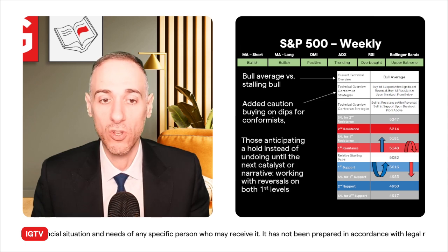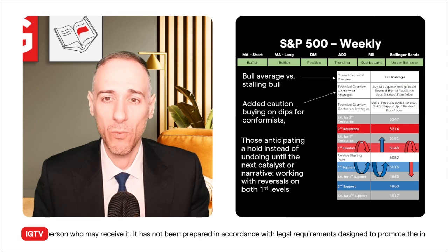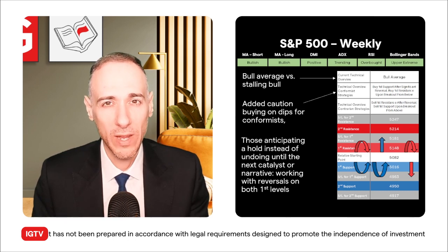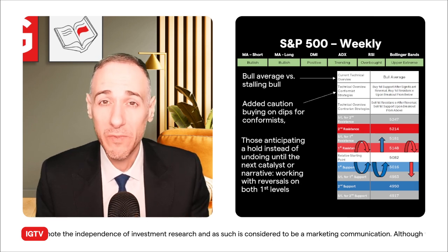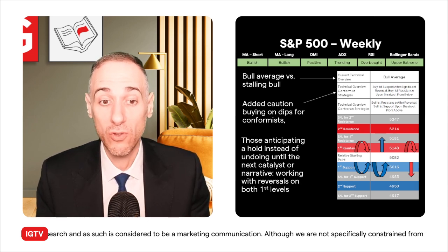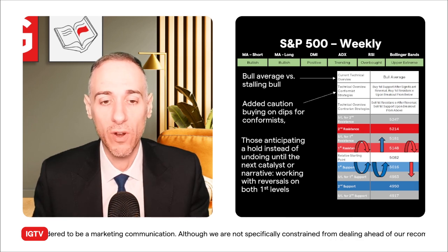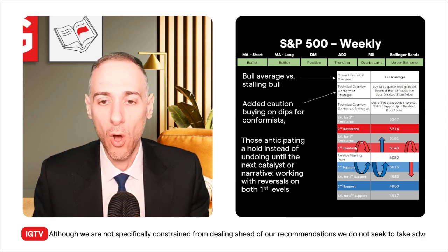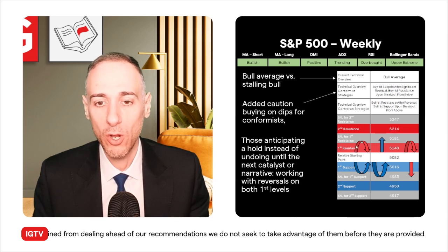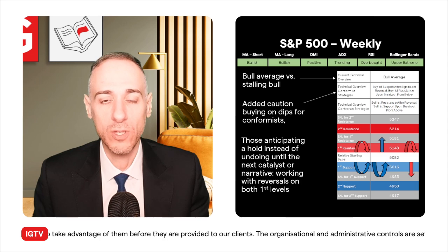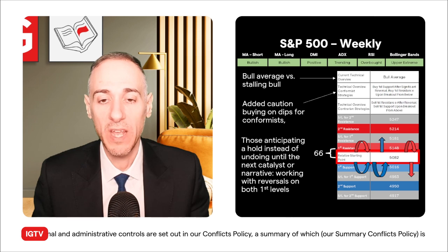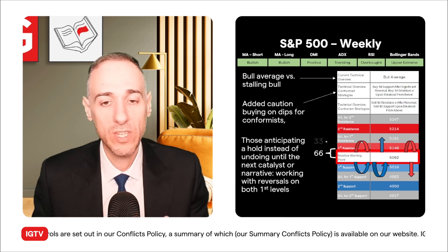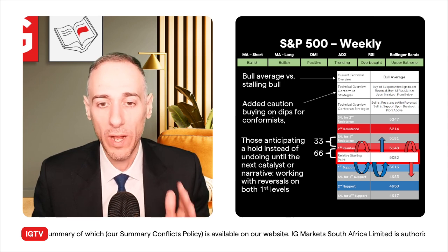What about those who think: I'm not really in the conformance camp, but not in the contrarian camp either — I don't think it's the start of some bearish move; I'm in the middle, anticipating a hold or maybe undoing some recent gains until the next catalyst. If that's the case, you might want to work reversals off both first levels: sell after reversal off the first resistance, or buy after reversal off the first support. The gap from the RSP to the first resistance is about 66 points, whereas it's going to be 33 to the first support.